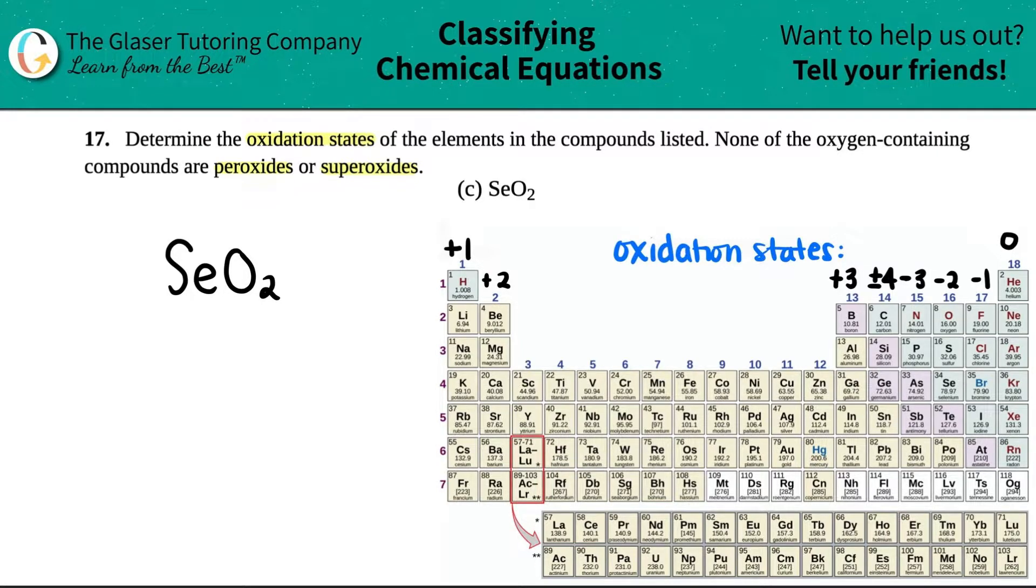And in order to do this, we just need to memorize our little trend for oxidation states on the periodic table. If you want a full rundown of this chart, go see number 16A in this playlist. That one is where I go in depth into what the charges are. But basically, they're all based off of the group number.